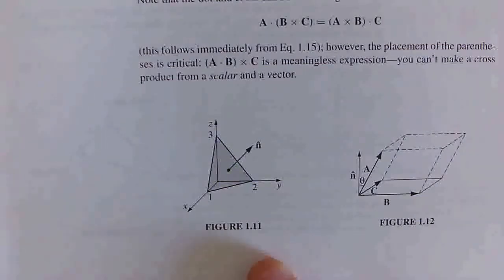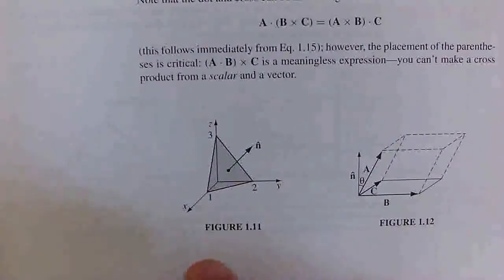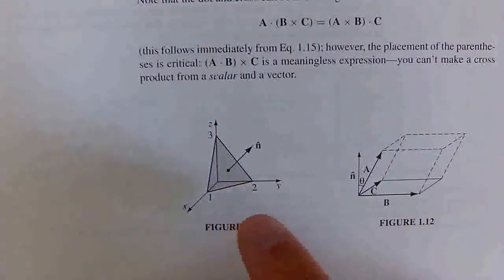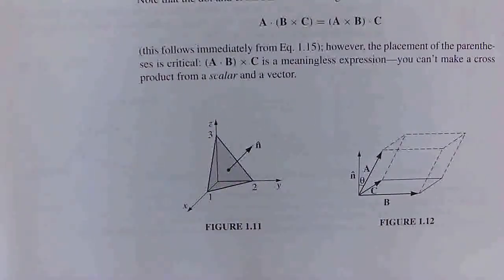So here's the figure in question. As we can see, it's an oblique plane, crossing the x-axis at 1, the y-axis at 2, and the z-axis at 3. And the normal vector n-hat is labelled there.